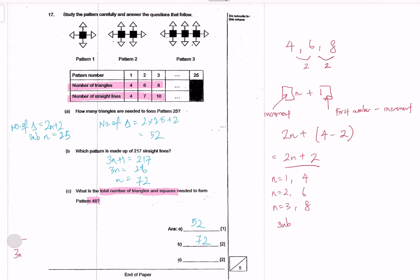So number of triangles, let me erase this part. So at pattern 48, number of triangles, it would be 2n plus 2, so 2 times 48 plus 2 would be 98.